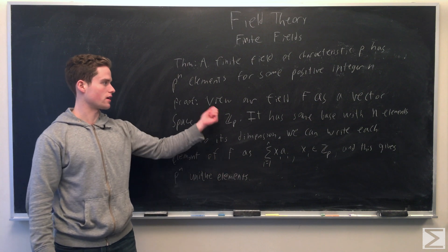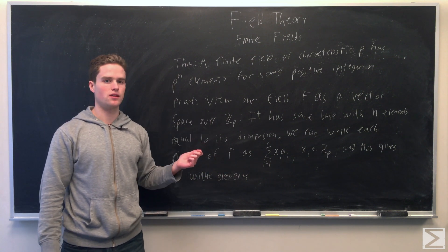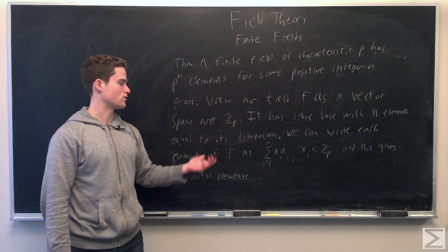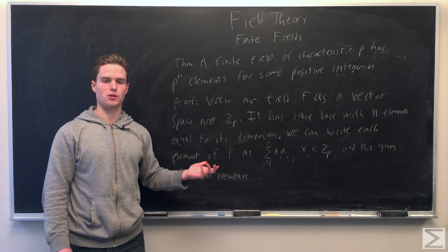And so we see viewing f as a vector space over Zp, it must have p to the n unique elements. And so we see these vector spaces must have p to the n elements.